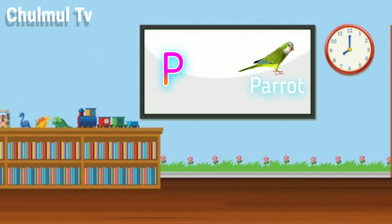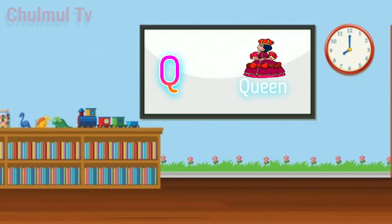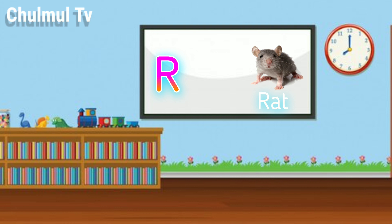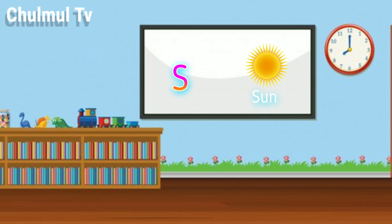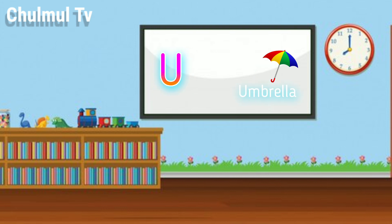P for parrot, Q for queen, O for red, S for sun, D for tiger.